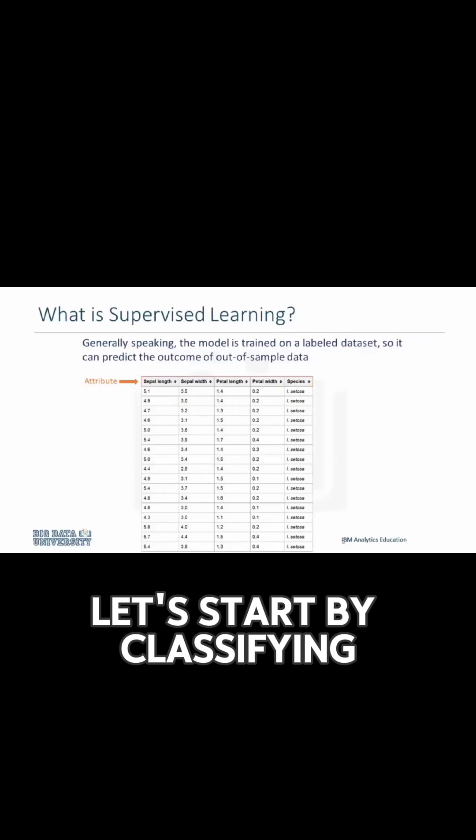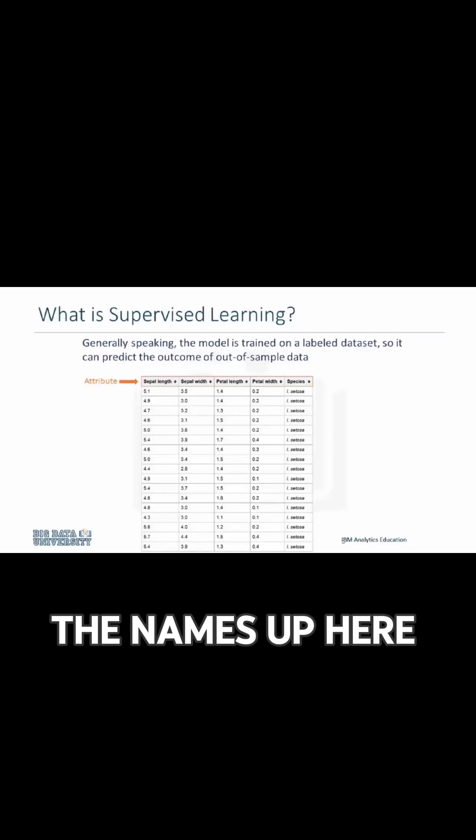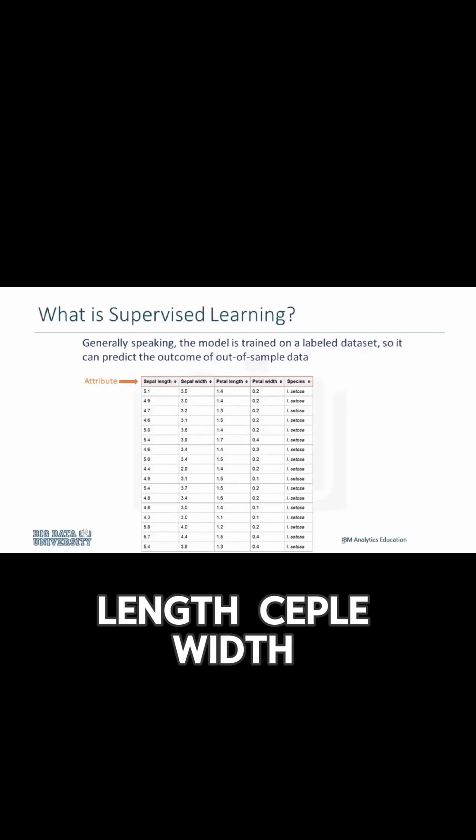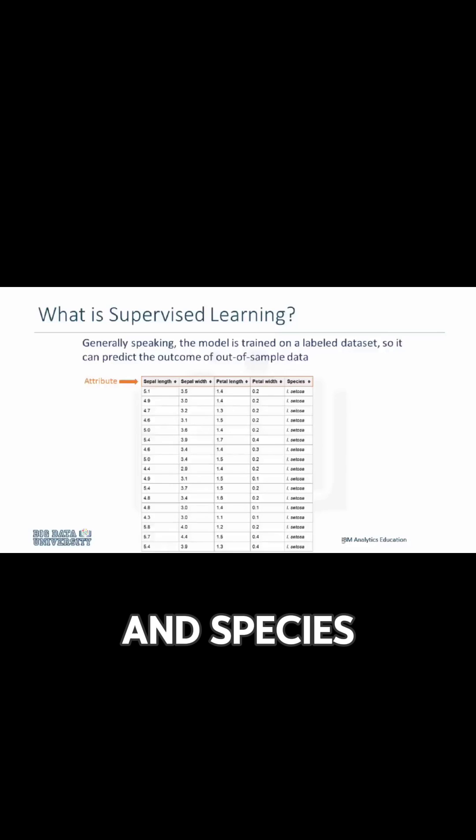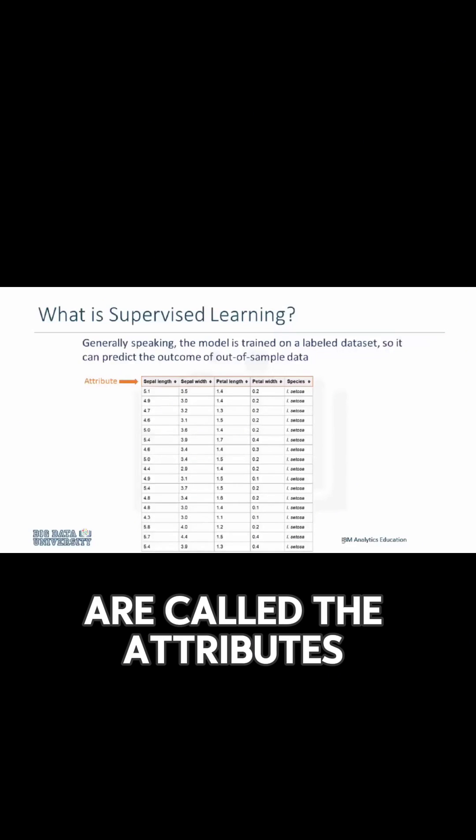Let's start by classifying some components of this table. The names up here, which are called sepal length, sepal width, petal length, petal width, and species, are called the attributes.